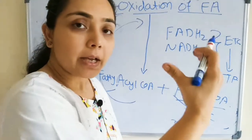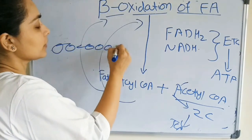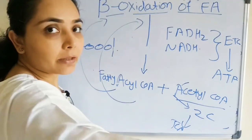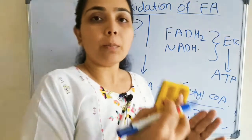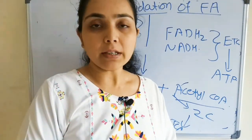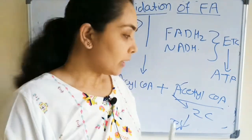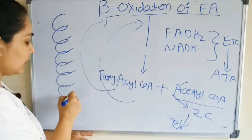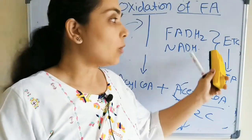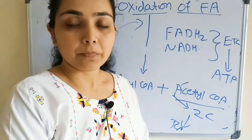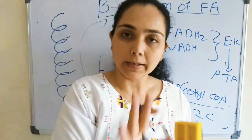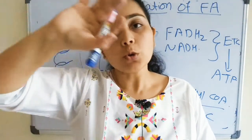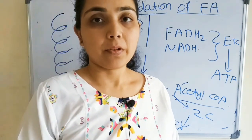In every cycle, 2 carbon atoms are removed in the form of acetyl-CoA, and the same process repeats depending on the chain length of the fatty acid. Generally, long-chain saturated fatty acids undergo beta oxidation. For palmitic acid, the cycle is repeated 7 times, giving acetyl-CoA, NADH, and FADH2, and ultimately ATP. This is the basic principle of beta oxidation of fatty acid.